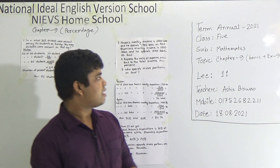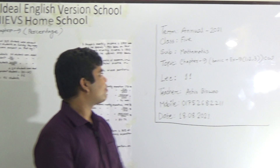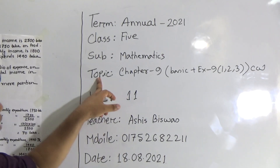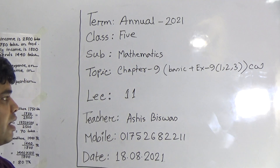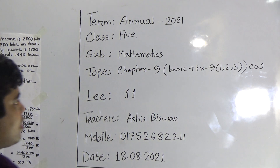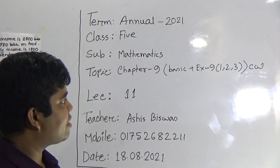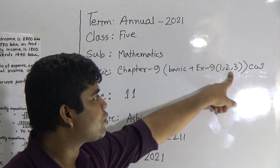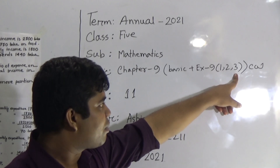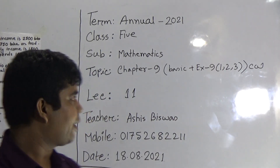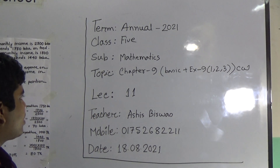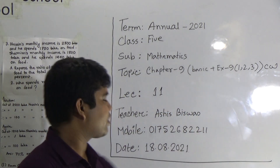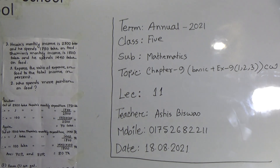Today is our lecture number 11 of the annual jump. Today's topic is chapter 9. From chapter 9, we shall solve the basic discussion and exercise 9. From exercise 9, we shall solve problems 1, 2, and 3 as your class work. And my dear students, there is good news for you — there is no homework today. So let us start.